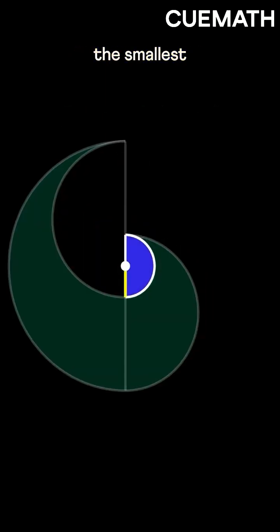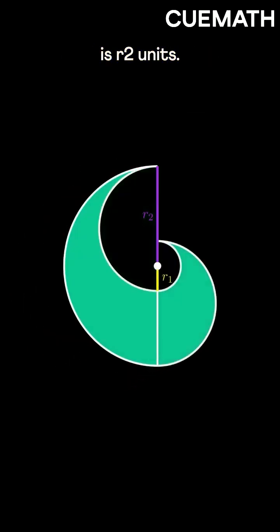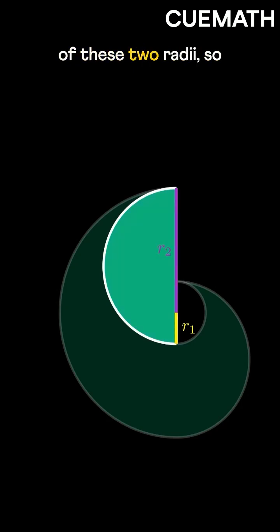Say the radius of the smallest semicircle is R1 units, and the largest one is R2 units. The diameter of this semicircle is the sum of these two radii, so it must be R1 plus R2.